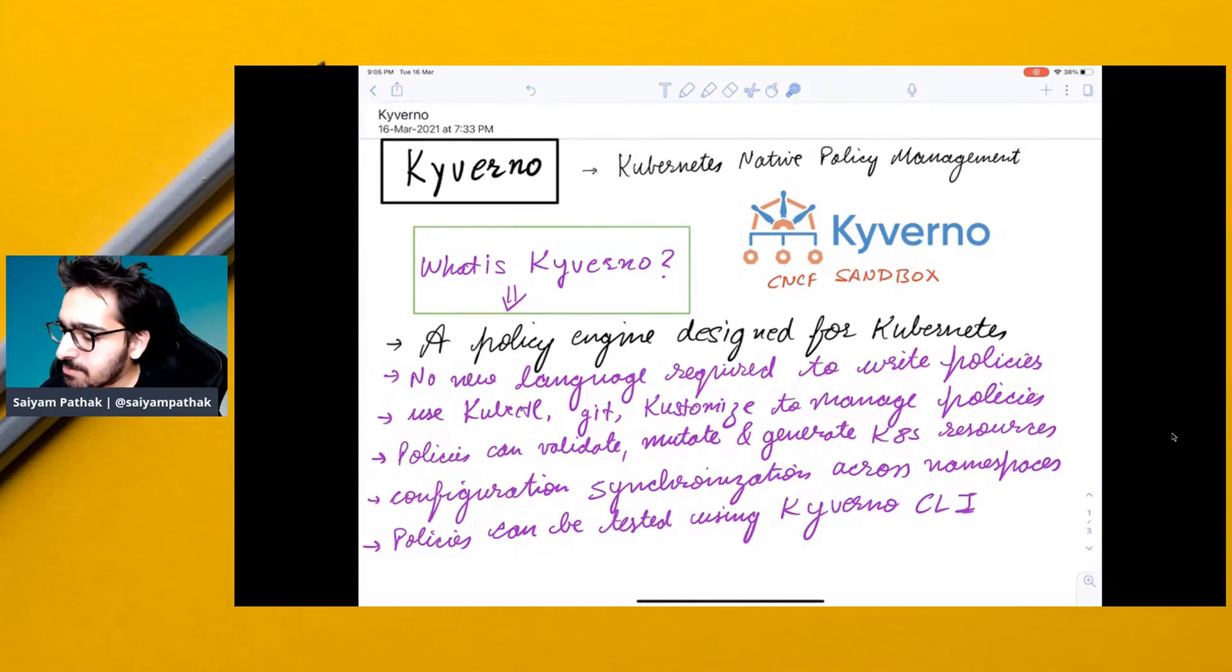So policies can validate, mutate and generate resources as well. So it can validate a resource, you can add labels to that resource, even you can generate a completely new resource. Configuration synchronization across namespaces and policies can be tested using the Kyverno CLI.